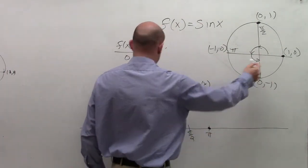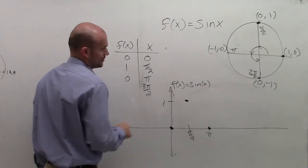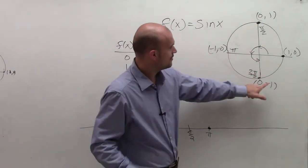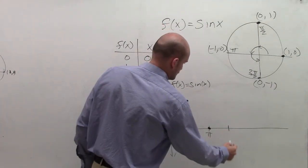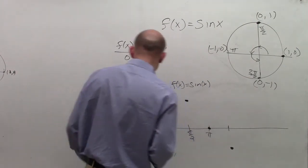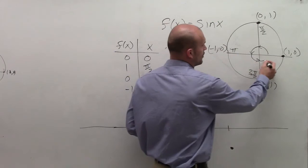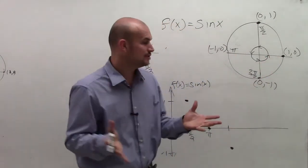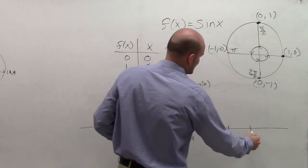Then we continue it over to 3 pi over 2. So at 3 pi over 2, my y value is at negative 1. So I go down to negative 1. So you guys can see that right there. Then if I continue one more all the way back up to complete one revolution, my sine value for 2 pi is, again, back up at 0.